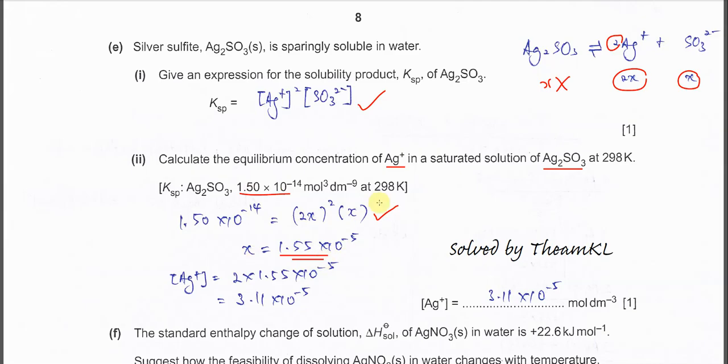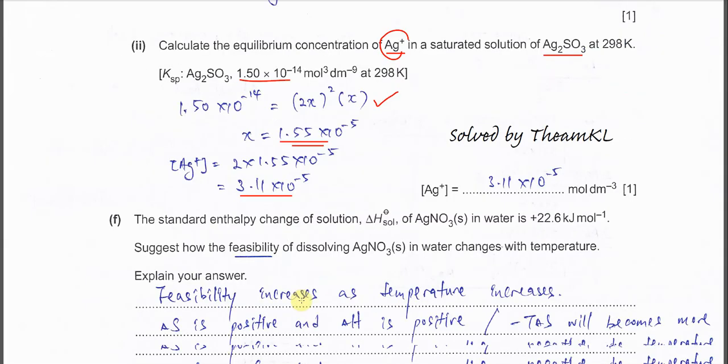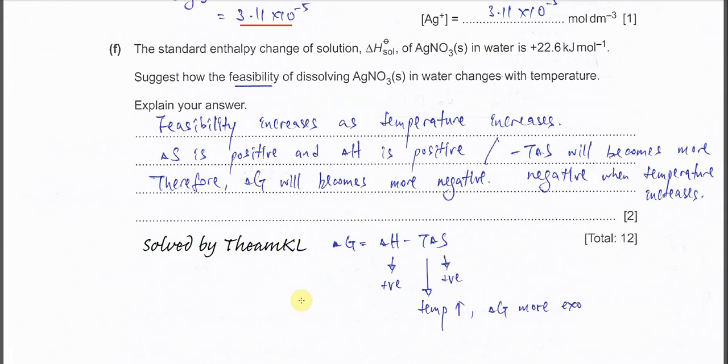So because now it's asked the concentration of silver ion, so it's actually 2X. So you just use 2 times the X here. So you get 3.11 times 10^-5. This is the concentration of silver ion.